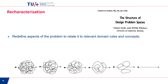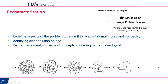The approach proposed in the literature on requirements is called re-characterization of the problem — going from the very messy situation toward something that, typically through simplification, can actually be solved and where simulation can show its added value. This involves redefining aspects of the problem to relate it to relevant domain rules and concepts — making a translation from a physics or chemistry perspective toward building energy or building physics concepts. We also need to be sure about how we're going to evaluate, and think about performance indicators.